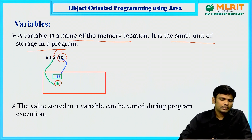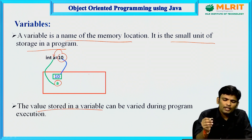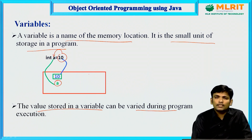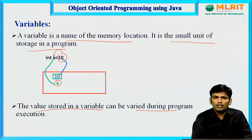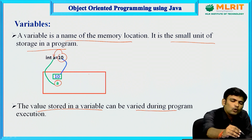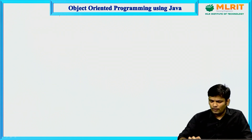As the name suggests, the value stored in a variable can be varied during execution of the program — it is not fixed. That is the reason we call it a variable. In Java, we can categorize variables into different types.